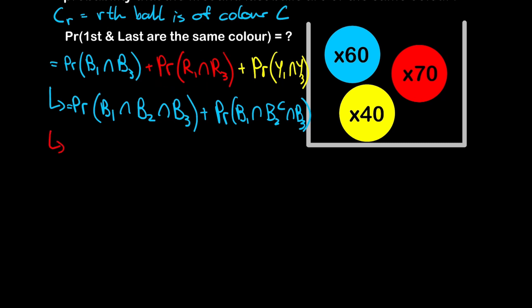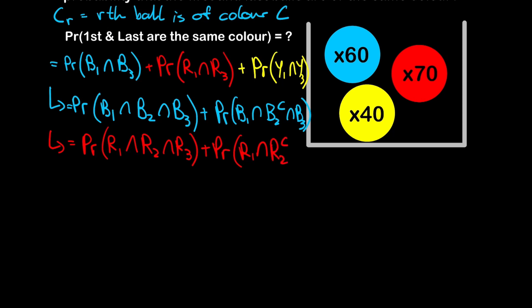We do the same for the red and yellow balls. For red: probability that the first ball is red, intersected with the second ball being red, intersected with the third ball being red; plus the probability the first ball is red, intersected with the complement of red for the second ball, intersected with the third ball being red. The same logic applies for yellow.